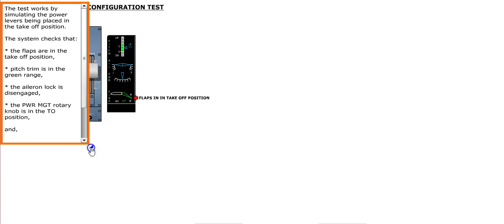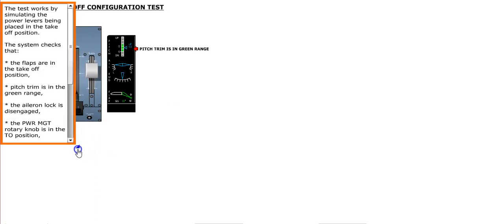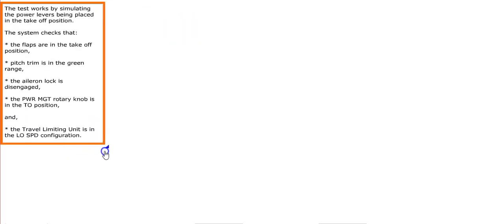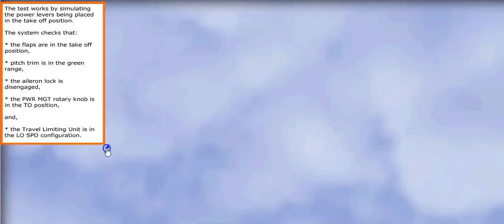The system checks that the flaps are in the takeoff position, pitch trim is in the green range, the aileron lock is disengaged, the power management rotary knob is in the takeoff position, and the travel limiting unit is in the low speed configuration.